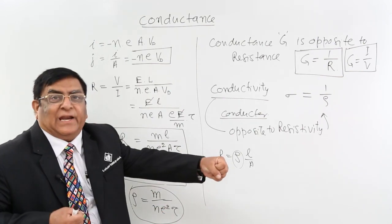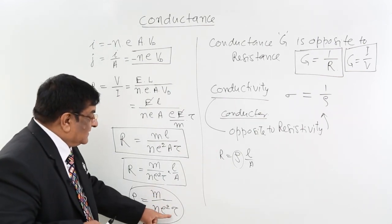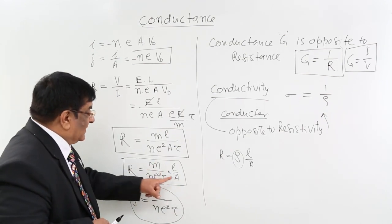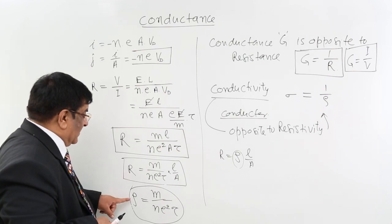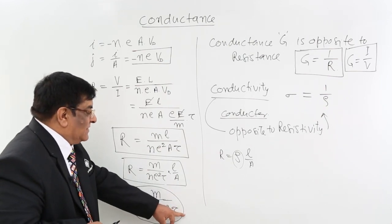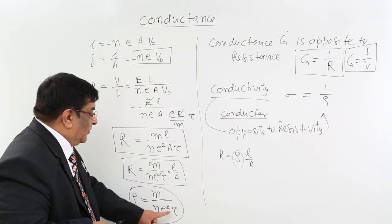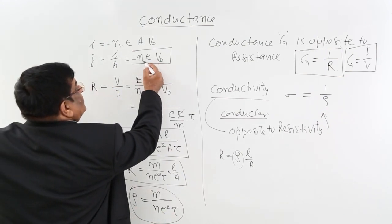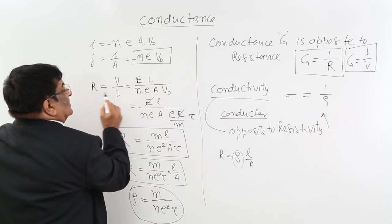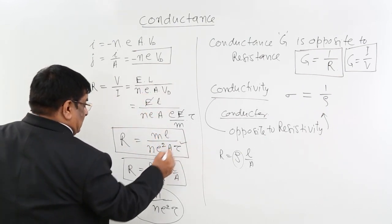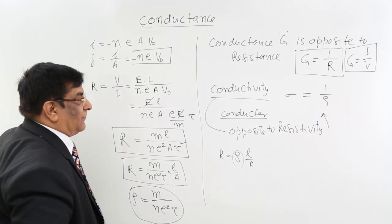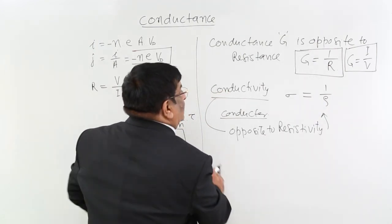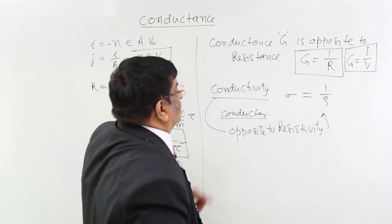When we increase the length, resistance changes. When we increase the area, resistance changes. But resistivity is free of length and area — it depends only upon the material. So J, R, and resistivity are all expressed in terms of microscopic quantities.